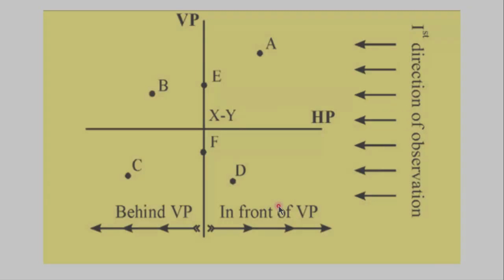What is the use of these directions? Look here, this is the first direction of observation. Now referring to VP, we can say that this part of the space is in front of VP while this part is behind VP. Point A and point D are in front of VP while point B and C lie behind VP. Point E and F are on the vertical plane.